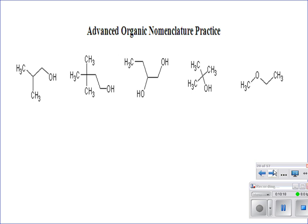Let's practice on the advanced organic nomenclature page. The first compound is an alcohol. The OH has to be on the longest chain. Without the methyl group, it's propanol — but what kind? The OH is on carbon one, so it's 1-propanol. Adding the methyl substituent at carbon two, the full name is 2-methyl-1-propanol.